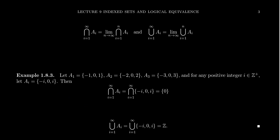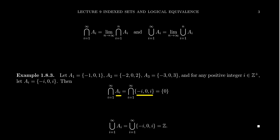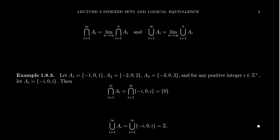We can ask: what is the intersection of this family as i ranges from 1 to infinity? The A_i's are the sets {-i, 0, i}, and we want elements belonging to every single set of this form. When you look at just the first three — A₁, A₂, A₃ — the only thing belonging to all of them is 0, because A₁ has 1 and -1 but A₂ doesn't; A₂ has -2 and 2 but A₃ doesn't. They all have a 0. In the general formula they all have 0 as well, so when you take the intersection of this infinite family, the only element belonging to all infinitely many sets is 0. The intersection is just the singleton {0}.